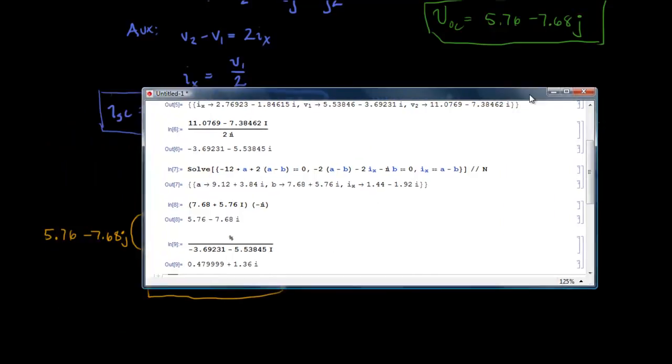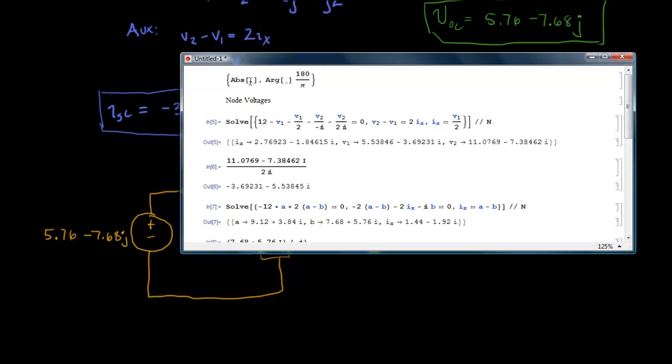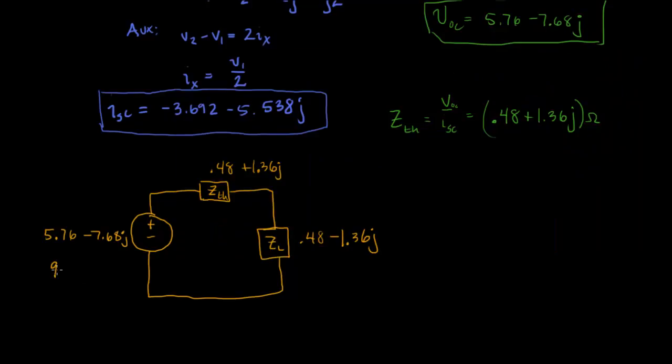So what we'll do is we'll take our voltage, this 5.76 value here, and I'm going to paste it into this little piece of code that I've already written. And this little piece of code is going to return the magnitude and the angle of our complex form. So it's 9.6 at an angle of negative 53.13.